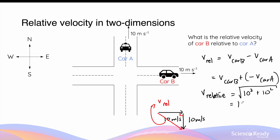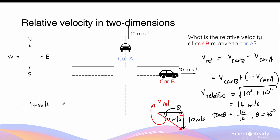The magnitude of this relative velocity is given by the square root of 10 squared plus 10 squared, which gives a value of 14 meters per second. We also need to find the angle theta. Tan theta equals 10 over 10, which means theta equals 45 degrees. So the final answer is 14 meters per second at an angle of east 45 degrees south. Alternatively, this can be written as a true bearing of 135 degrees. This is the velocity of Car B relative to Car A.